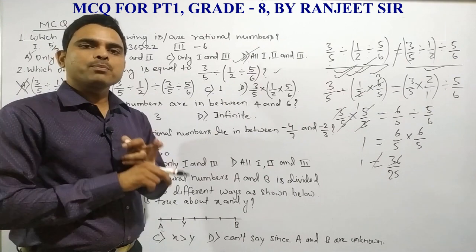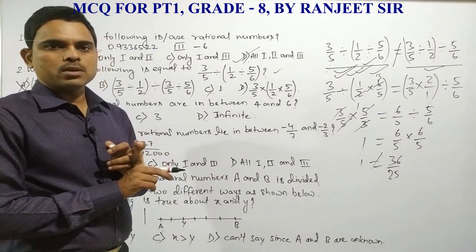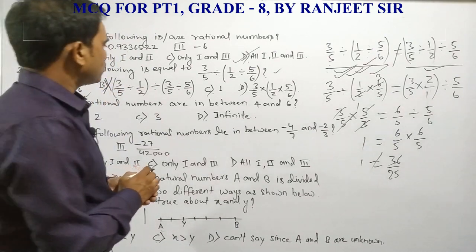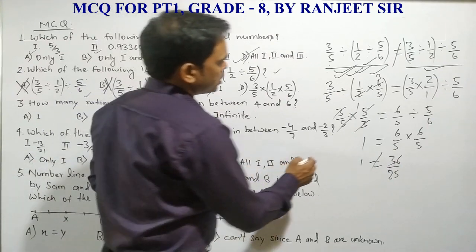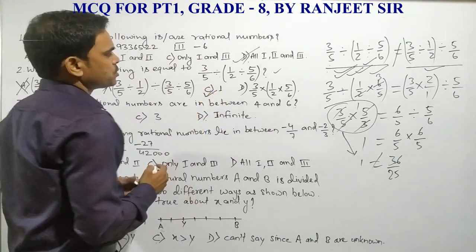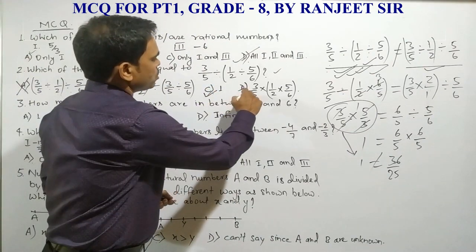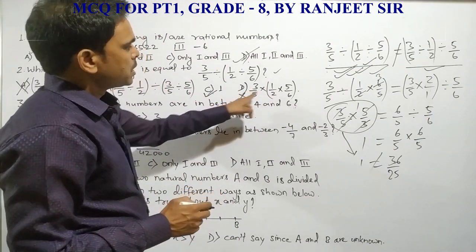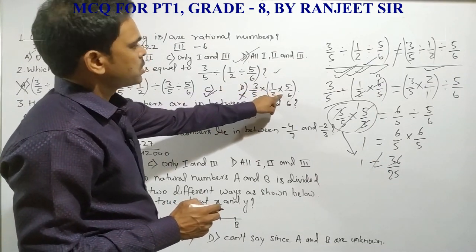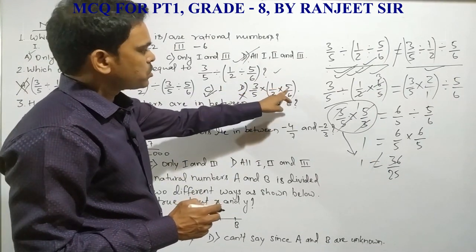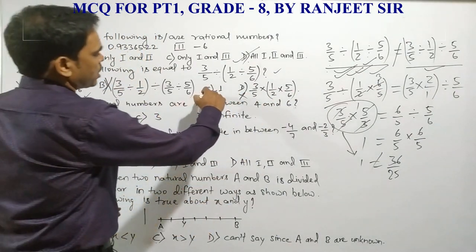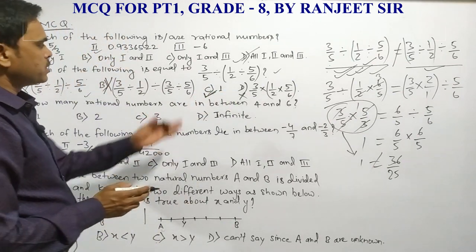Option B shows the distributive property over division, which is also not true, so that is wrong too. The calculation for option C gives only one consistent result, so option C is correct. Option D is completely wrong because the division sign is not properly changed to multiplication with the reciprocal. So the correct answer is option C.